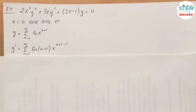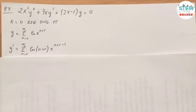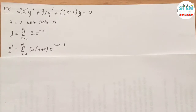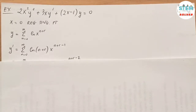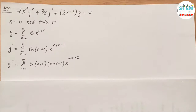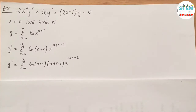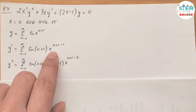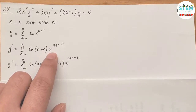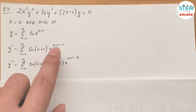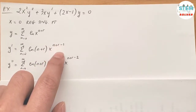Take the first derivative: Σ from 0 to ∞ of cₙ (n+r) xⁿ⁺ʳ⁻¹. Take the second derivative: Σ from 0 to ∞ of cₙ (n+r)(n+r−1) xⁿ⁺ʳ⁻². When you take the derivative, just bring down the exponent and then subtract the exponent by 1.